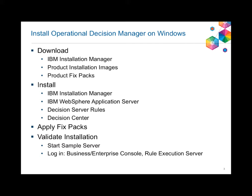This is an outline of the process. First, you're going to download the components that you need. Secondly, you'll install the different components in the order outlined. If appropriate, you'll apply FixPacks, and we're going to show that in the video. And finally, you'll validate your installation. The rest of this video will walk you through the installation, FixPack, and validation steps using screen capture and narration.